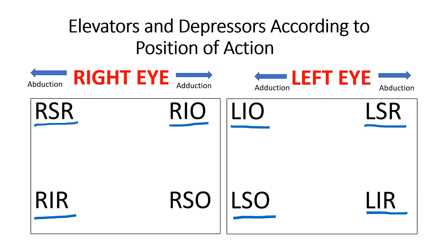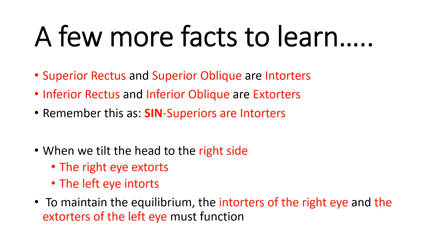Having discussed the elevators and depressors of the eye, I would now want to discuss a little bit about the intorters and extorters of the eye. Intorsion means inward rotation of the eye whereas extorsion means outward rotation of the eye. The easiest way to remember which are the intorters and which are the extorters is the mnemonic SIN, which stands for superiors are intorters. So basically the superior rectus and superior oblique are intorters, and the inferior rectus and inferior oblique are the extorters of the eye.